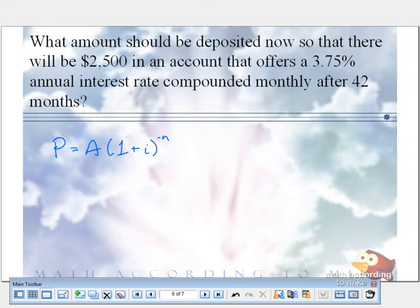So how much do we want in the future? 2,500 times 1 plus, what is our i? 0.0375 over 12.